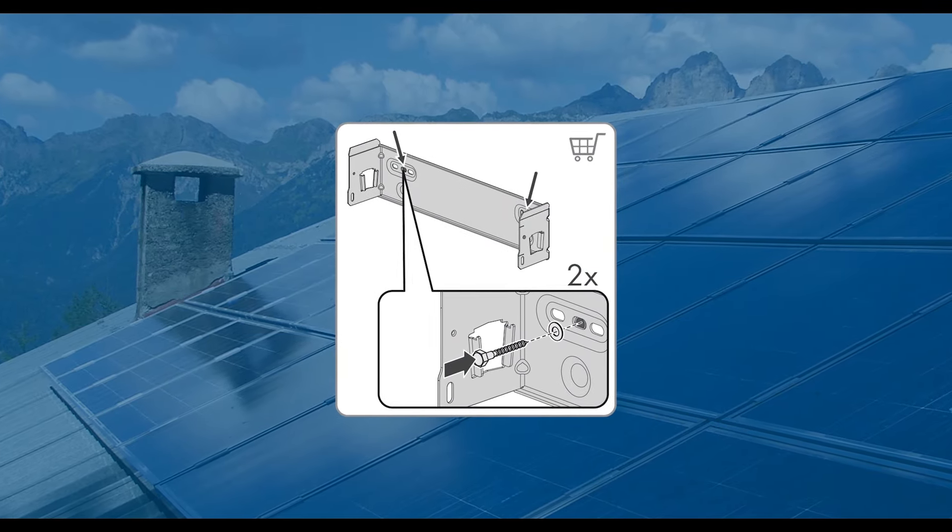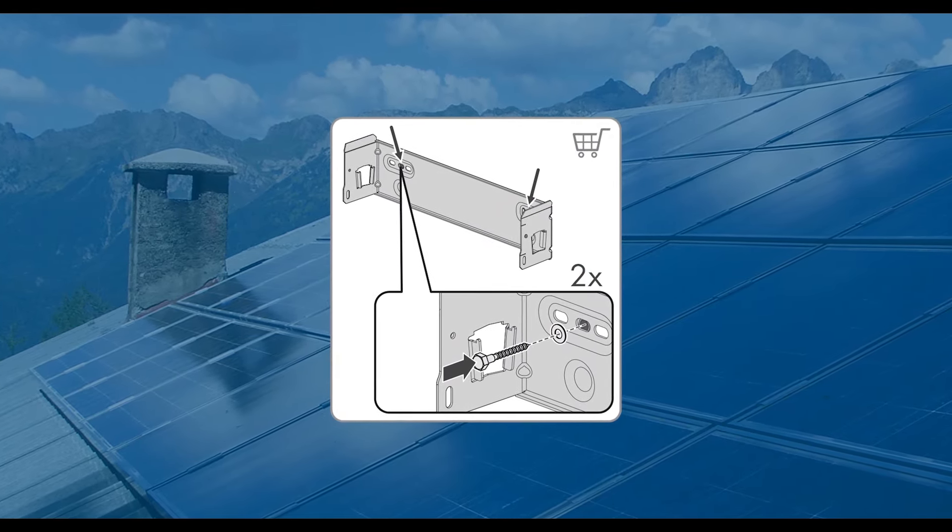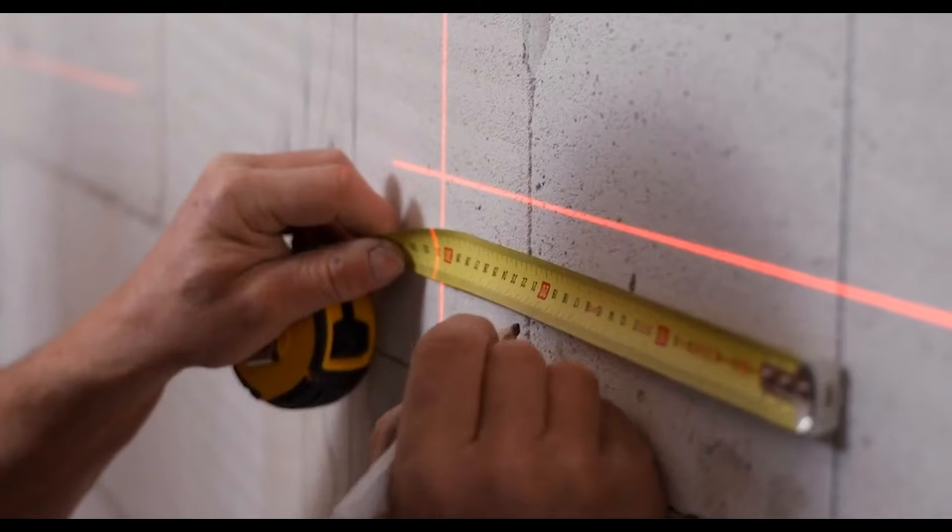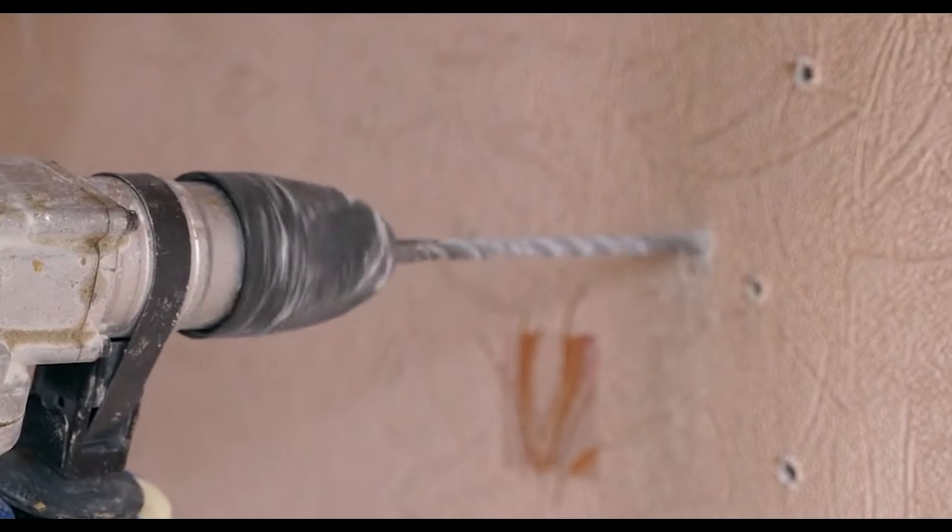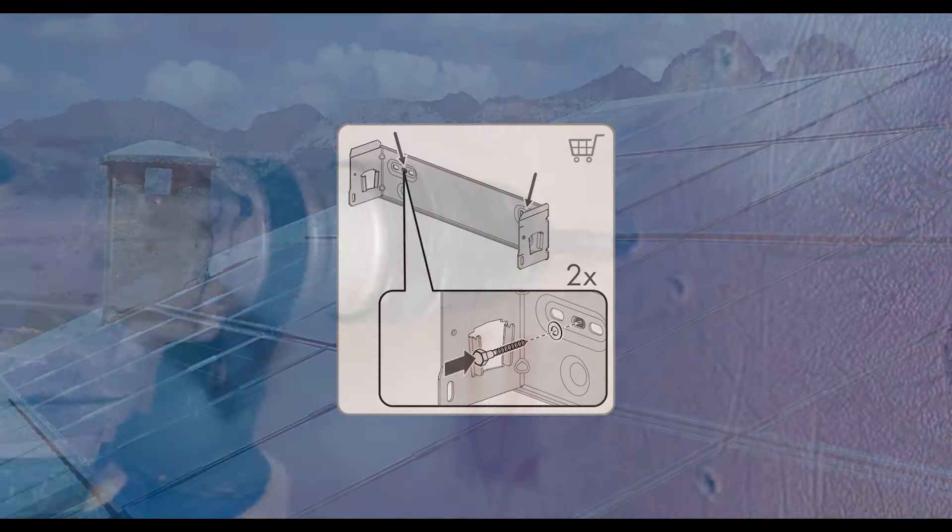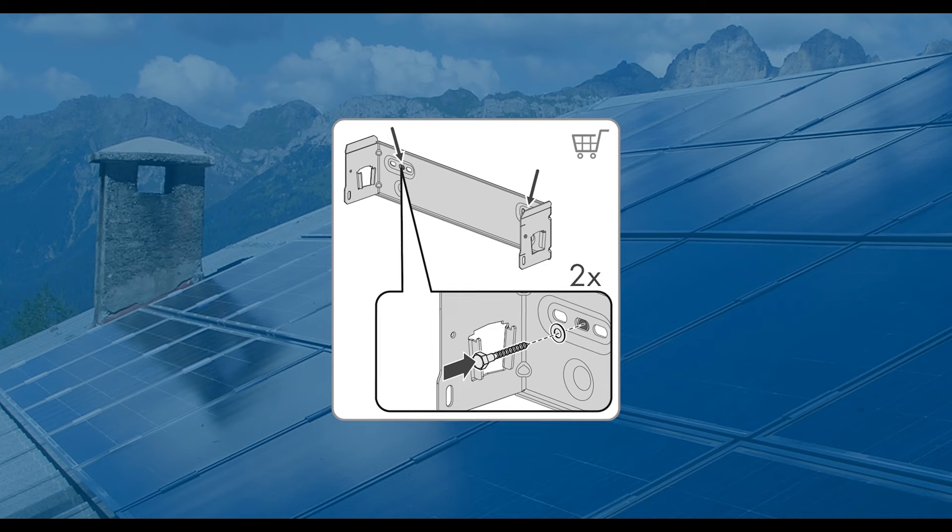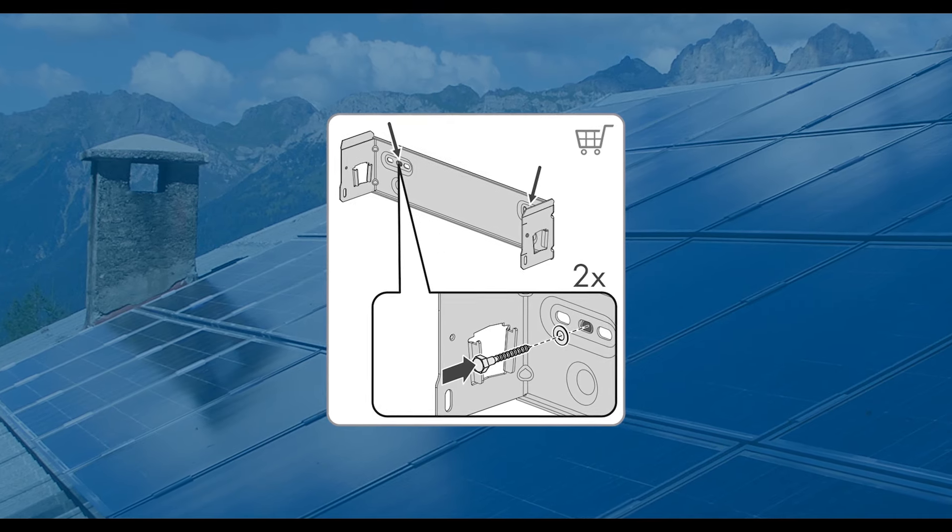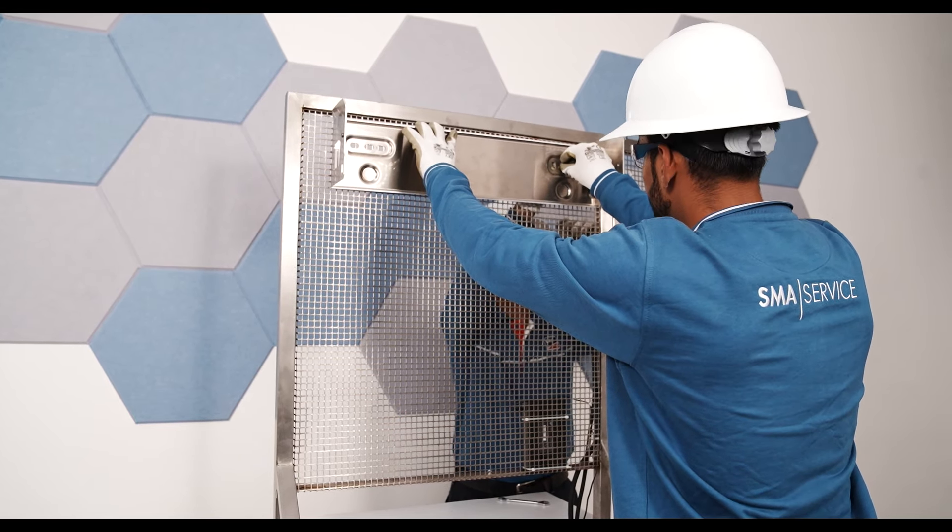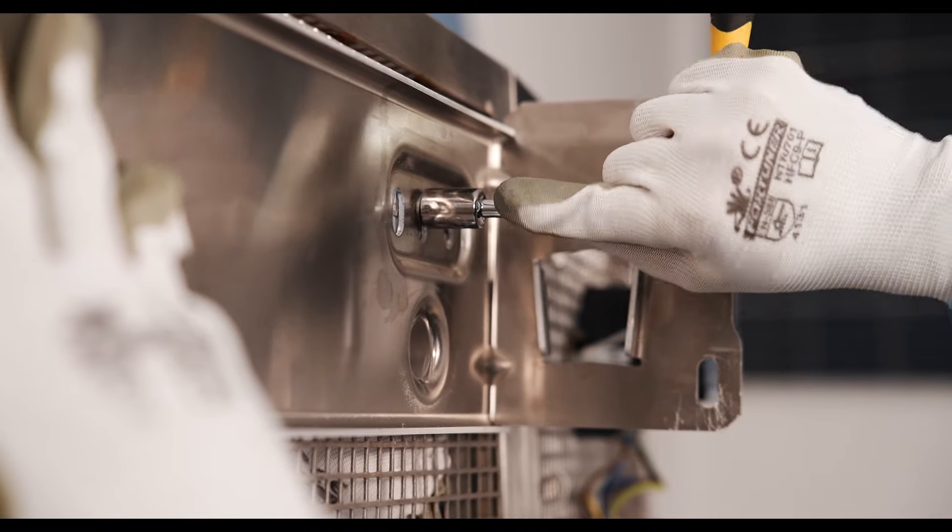Mount the wall bracket using two screws. Align the wall mounting bracket horizontally on the wall. Mark the positions and drill the marked holes. Insert screw anchors into the drilled holes if the support surface requires them. Secure the wall mounting bracket horizontally using screws and washers.